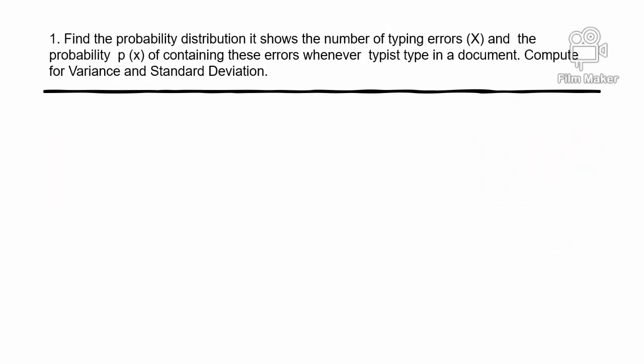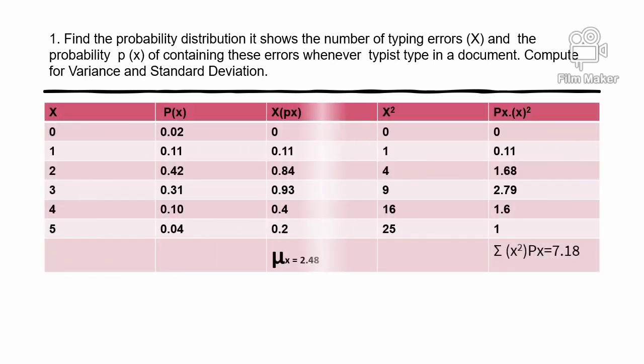Find the probability distribution showing the number of typing errors x and the probability P(x) of containing those errors whenever a page is typed in a document. Compute for the variance and standard deviation. The given table has columns: x, P(x), x·P(x), x², and x²·P(x).